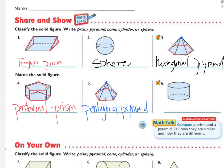And our last one, I see a circle and a circle, so two bases, and then no edges. It's just a curved surface and it looks like a soup can, so that is a cylinder.